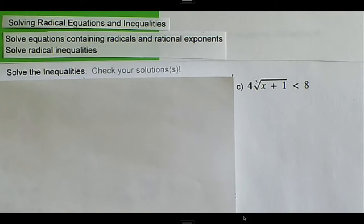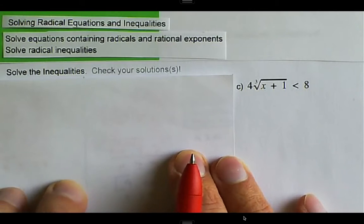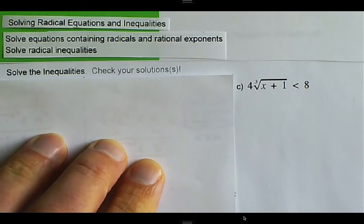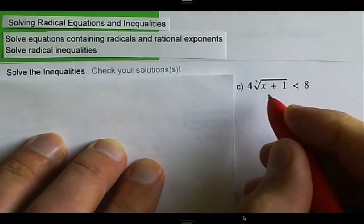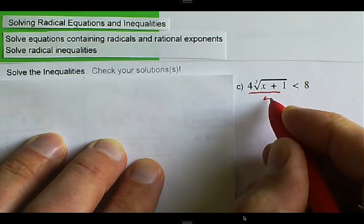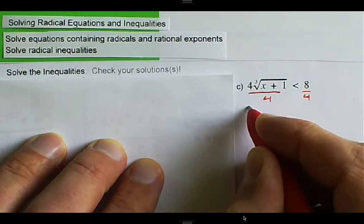We are solving radical inequalities, and it's going to be a similar process to how we solved radical equations. We have to get the radical by itself on one side, so here we're going to divide by 4 and divide by 4.